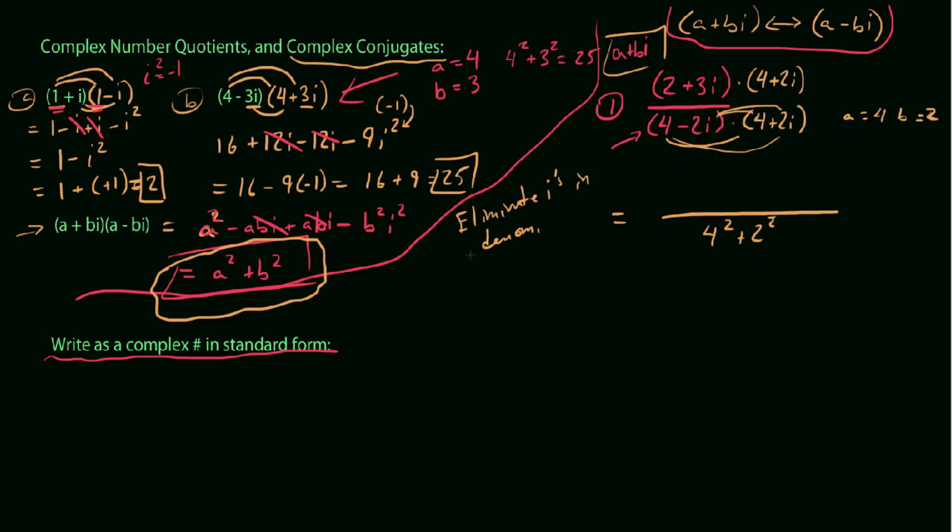We can leave it ambiguous in this case. But basically, we know on the bottom we're going to get 4 squared plus 2 squared. And this can be shown, if you want to FOIL it somewhere else. But essentially, we end up with, it looks like here, 16 plus 4 is 20.